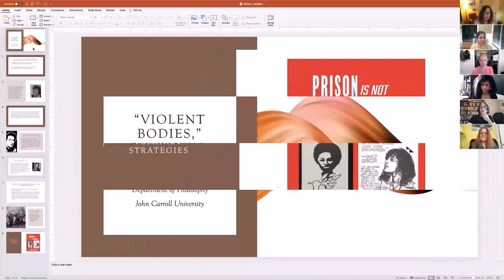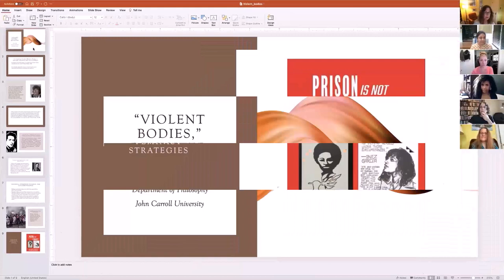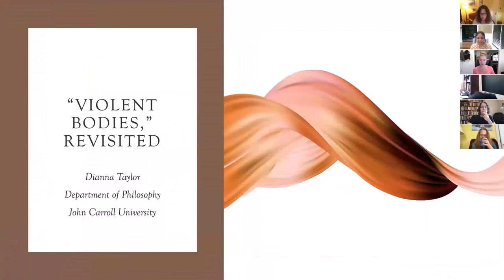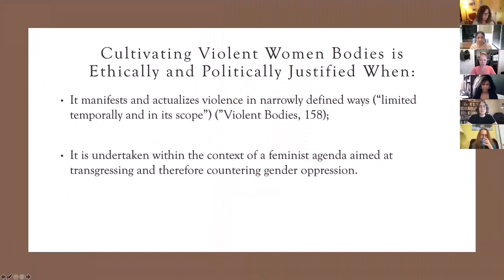I'm going to read my paper but refer to the slides as I go. 'Violent Bodies' is the title of the final chapter of Ami's 2002 book. I wanted to have a look at that chapter because a lot of her work focused on violence in the context of armed conflicts like genocide, war, and terrorism. I'm interested in this chapter because of my current work on feminist counter-violence in response to violence against women.